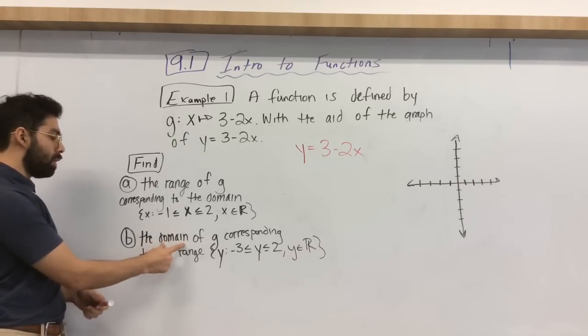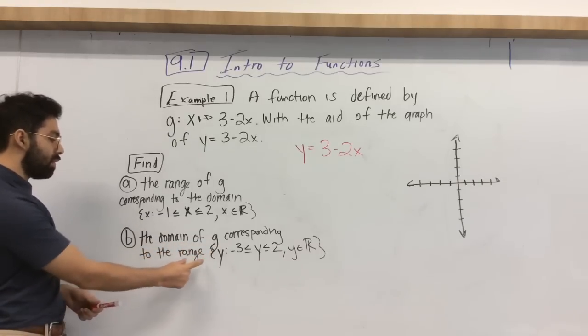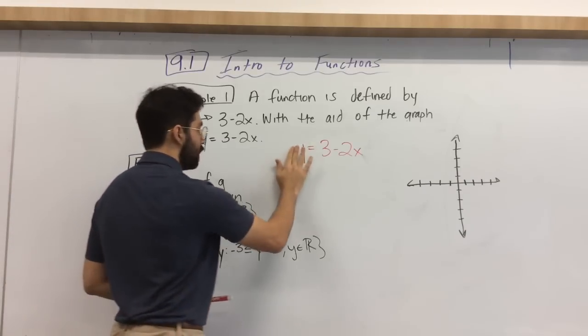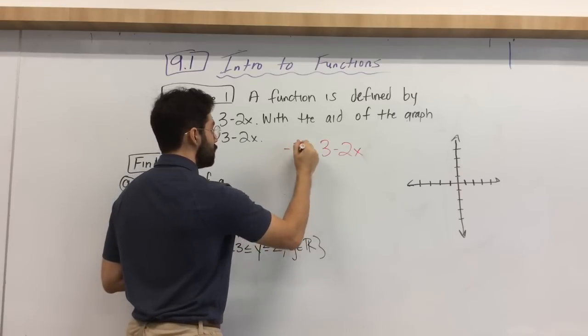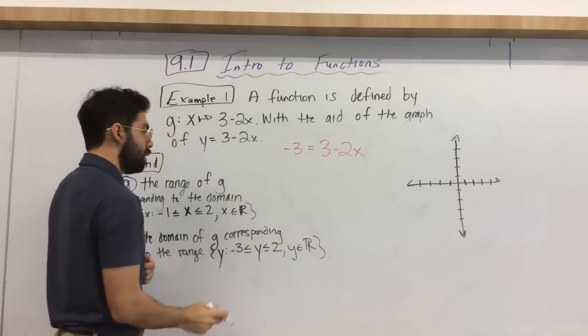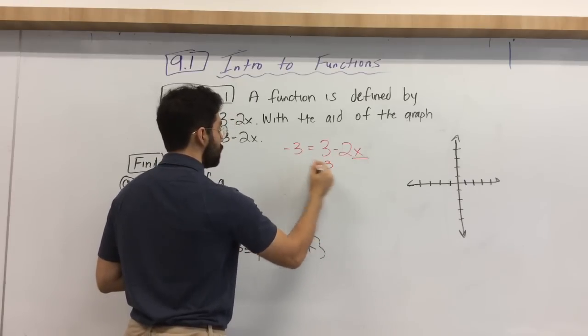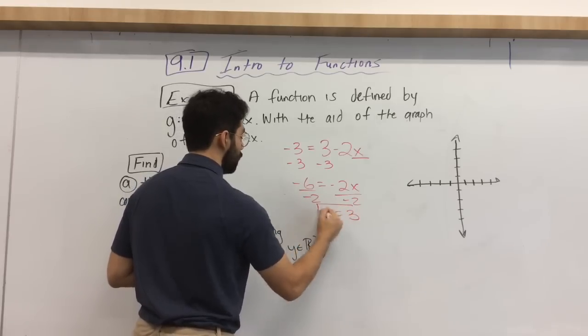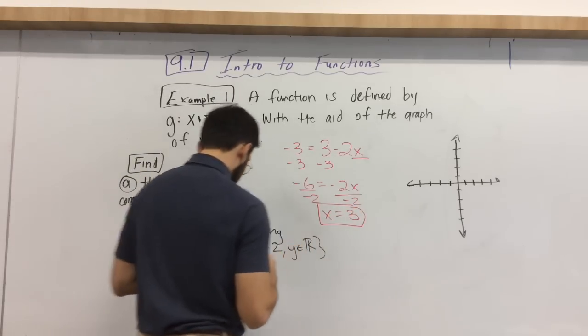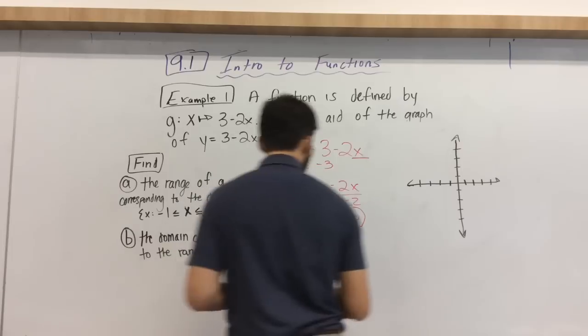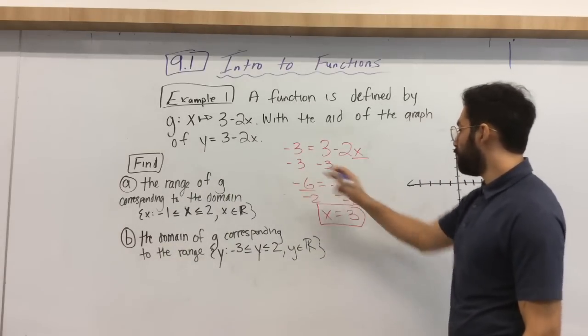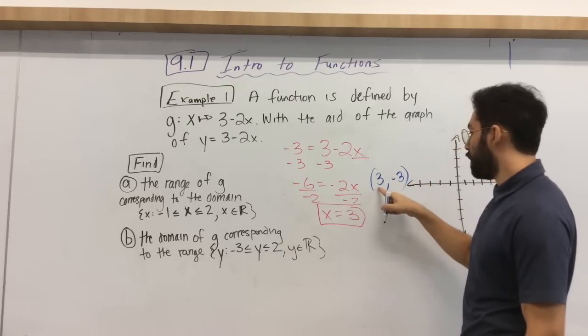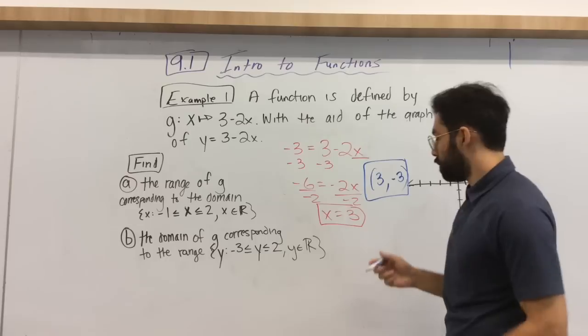And again, it's important to know our vocab: domain being our x values, range being our y values. So it has given us the range. It has given us the output, which is negative 3 and 2. So let's replace for this first scenario. Let's replace f of x or y for negative 3. We have to solve for this x. So minus 3, minus 3. Negative 6 equals to negative 2x. And x equals to 3. Okay? So think back. Let's go ahead and write this down. Our first coordinate. We had an output of negative 3. And our input, we found out our domain is 3.